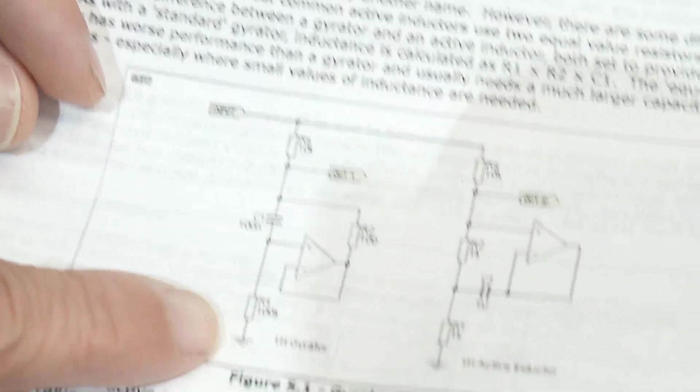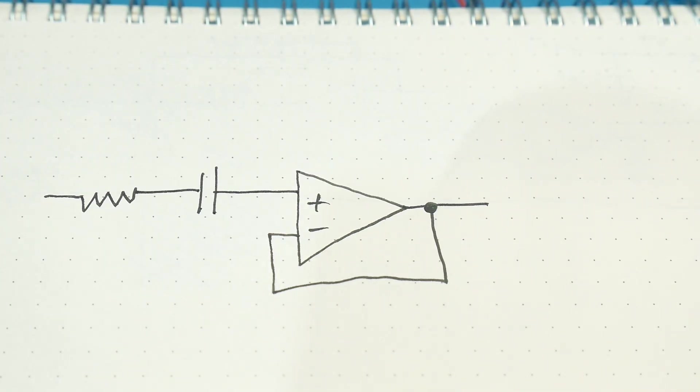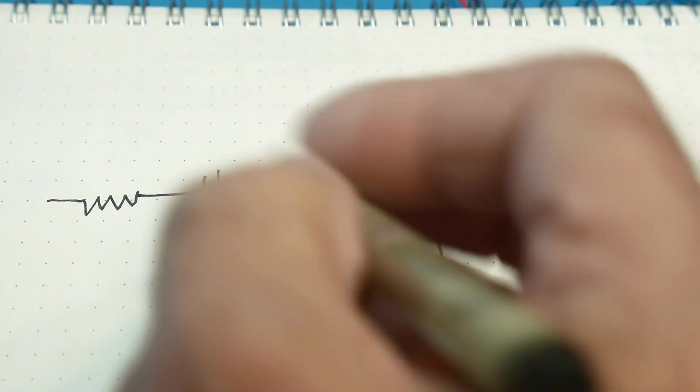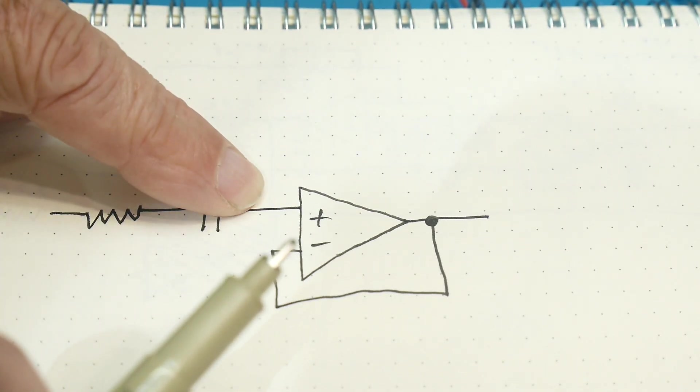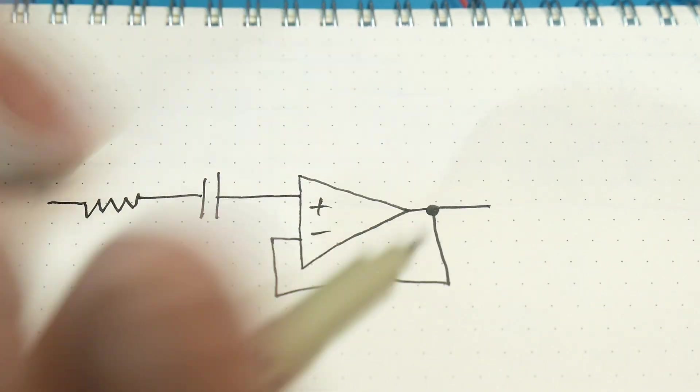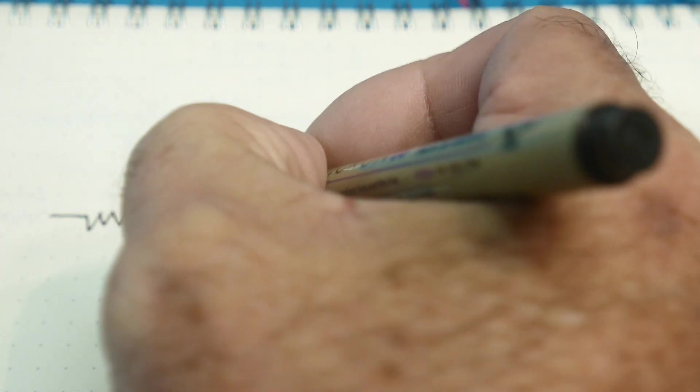Now there's also this extra resistor down here, this 100k. So in this particular circuit, if you tried to build this, you would find yourself in trouble because you have no DC value here. You need to bias this thing into some known condition.